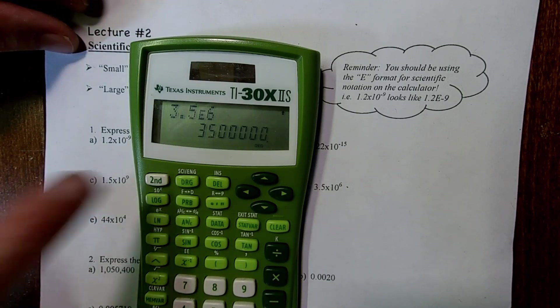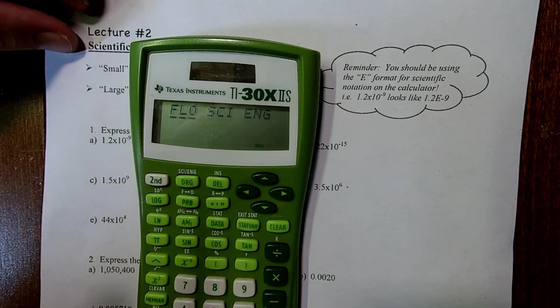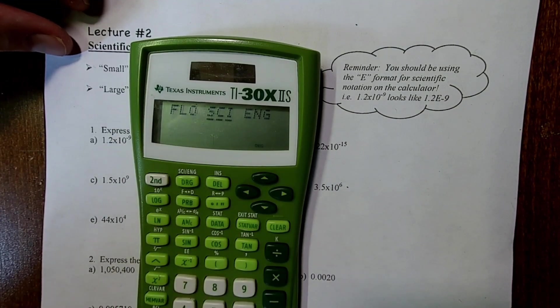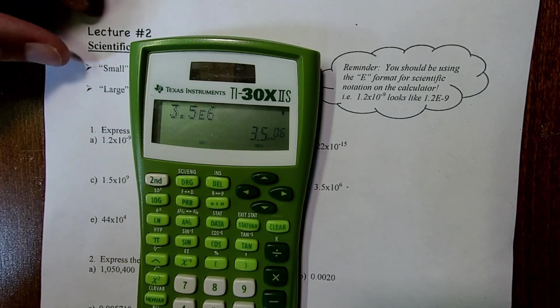Say, though, I want to keep it in scientific notation. So then I'm going to hit 2nd, science, engineering. Flow is decimal. Just cursor over to sci, and now it's back in scientific notation when I hit enter.